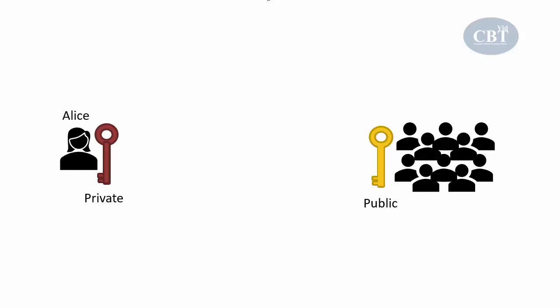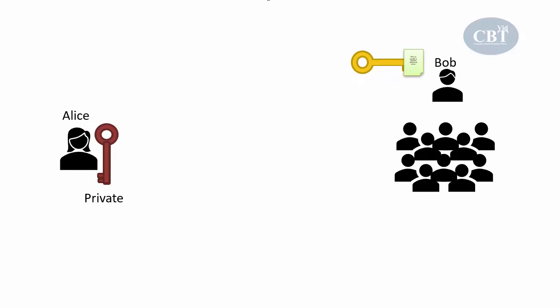Let's say Alice has a pair of public and private keys and she wants to exchange some data with Bob. She provides Bob with her public key and asks Bob to encrypt the message using her public key and send it back to her. Bob has a plain text, uses Alice's public key, encrypts the message, and then forwards it to Alice. Now this message that has been encrypted with Alice's public key can only be decrypted with Alice's private key. If you encrypt the message with one key, you can decrypt it with the other key only — not any other keys.